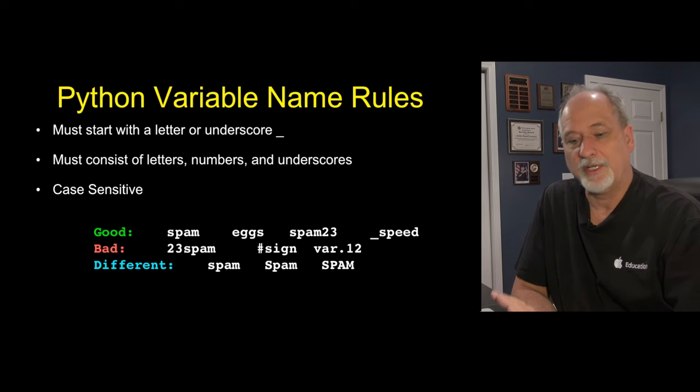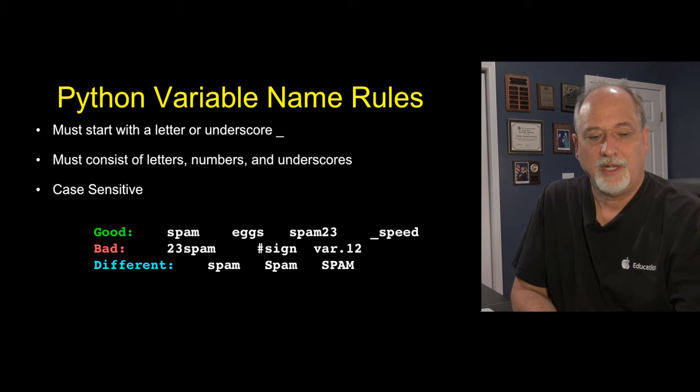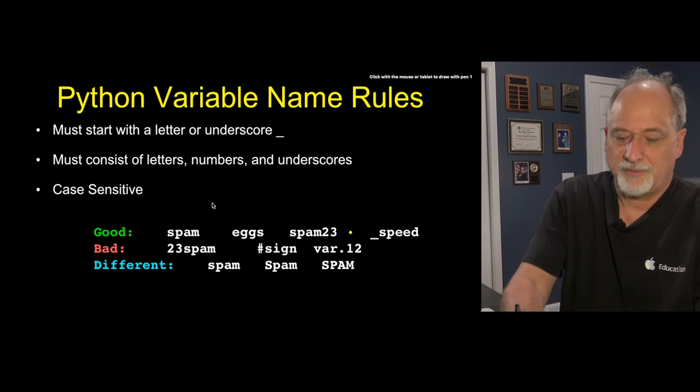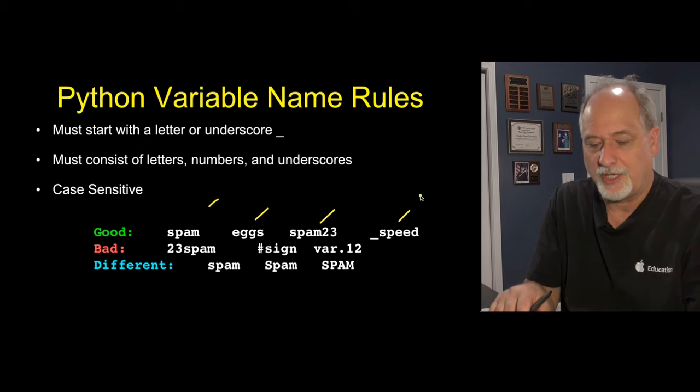You can have letters and numbers and underscores after the first character. And they're case sensitive, but it's really a bad idea to use case as the only differentiator. So in this case, spam, eggs, spam23, and _speed are all totally legit.